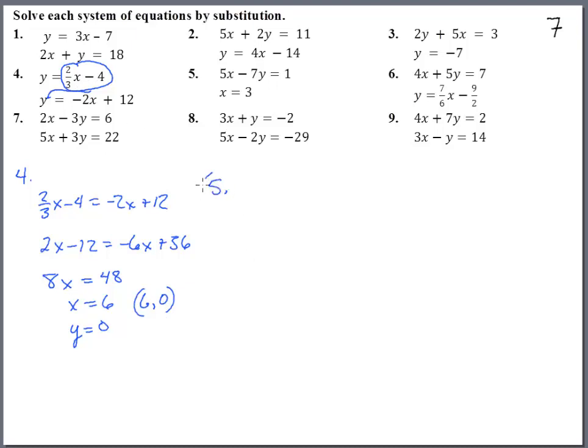Number 5. Here they have x equals 3. Oh, that's nice. They gave us half of the solution again. So we get 15 minus 7y equals 1. Subtract 15. We get negative 7y equals negative 14. And then divide by negative 7. We get y equals 2. So x is 3, y is 2. And that will work in both of those equations.